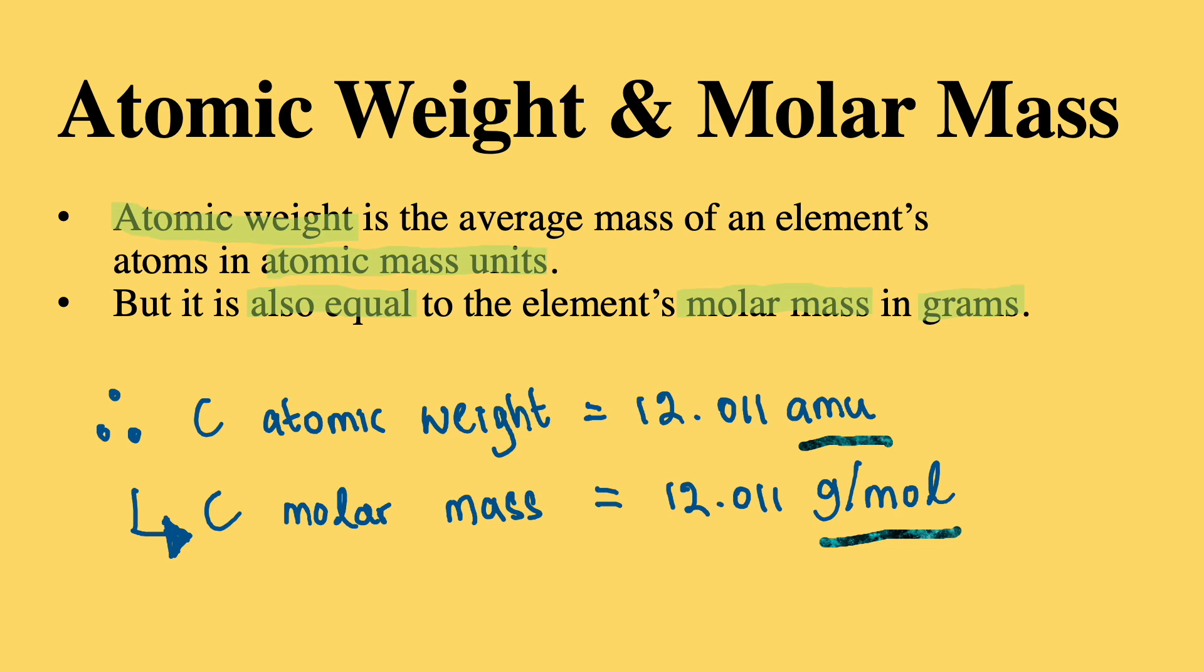So, as discussed, the atomic weight is equal to the average mass of an element's atom in atomic mass units. What's unique about the atomic weight is that this value is also equal to the element's molar mass in grams.